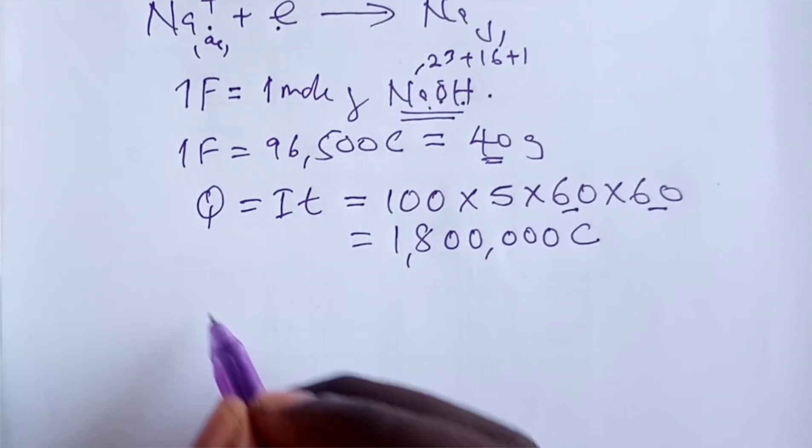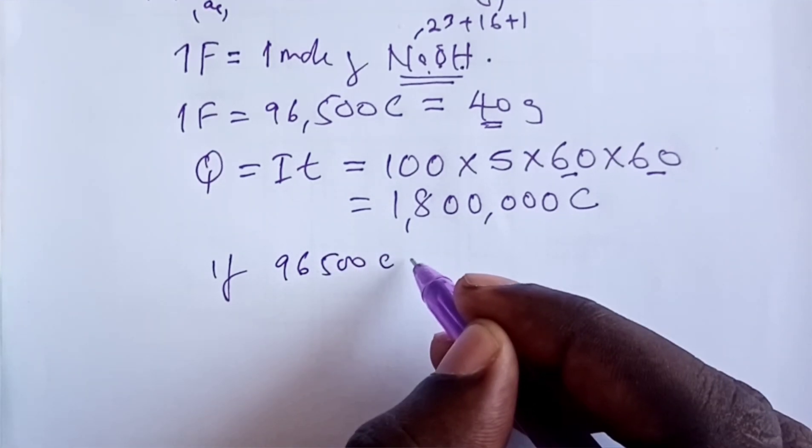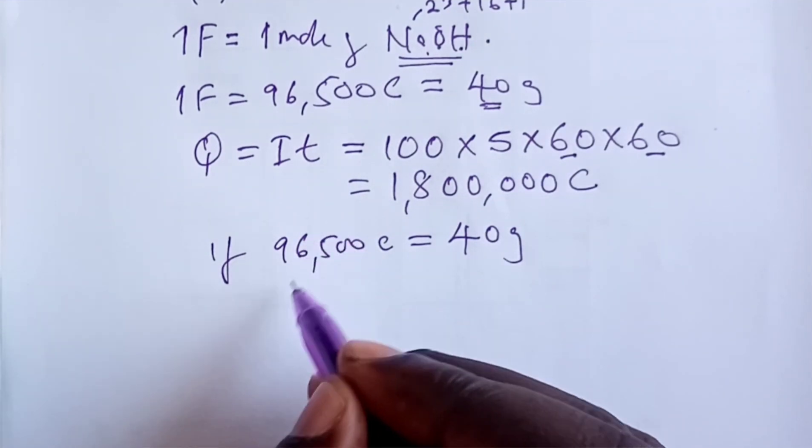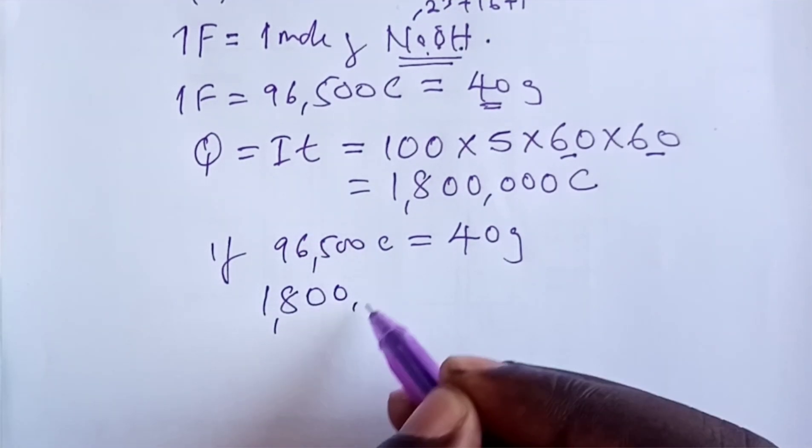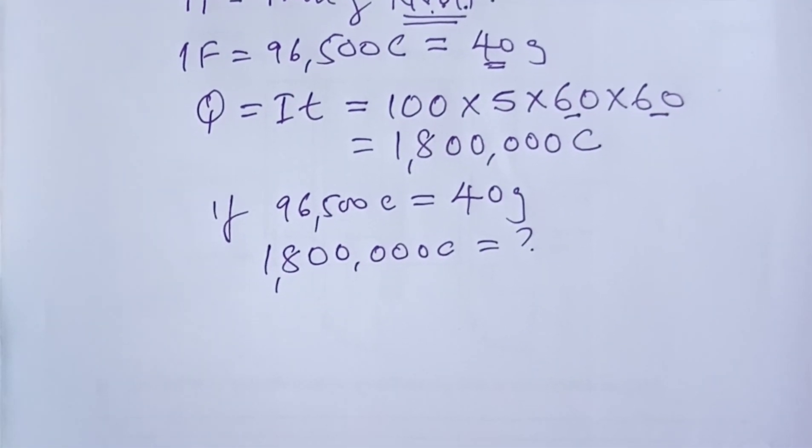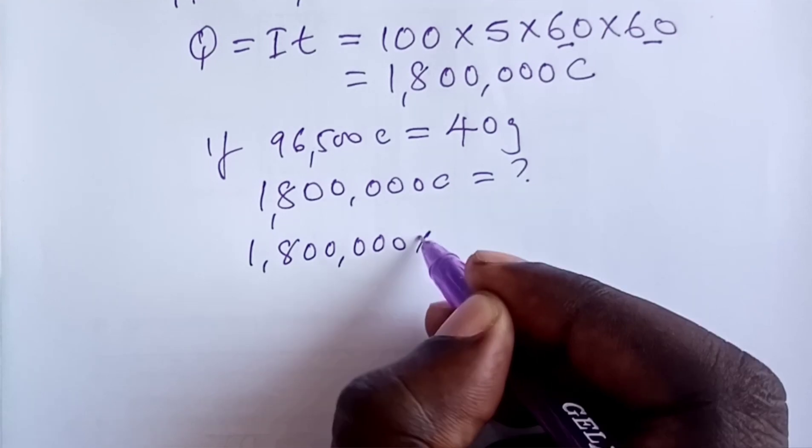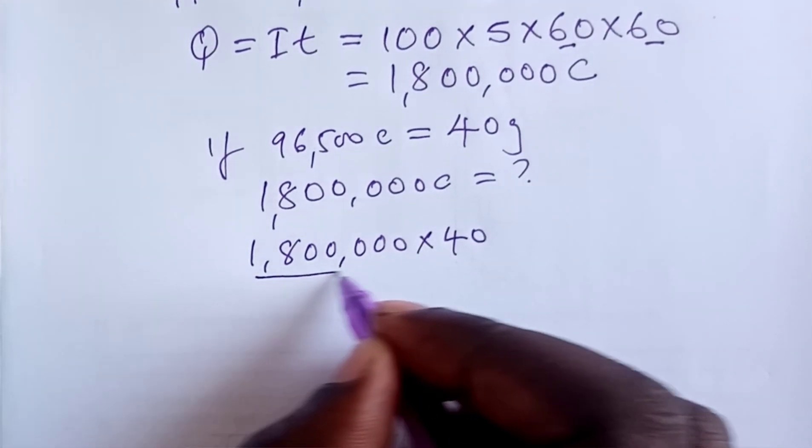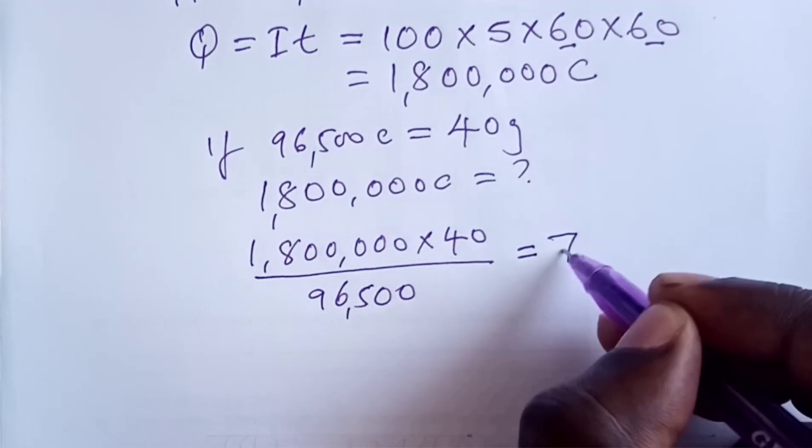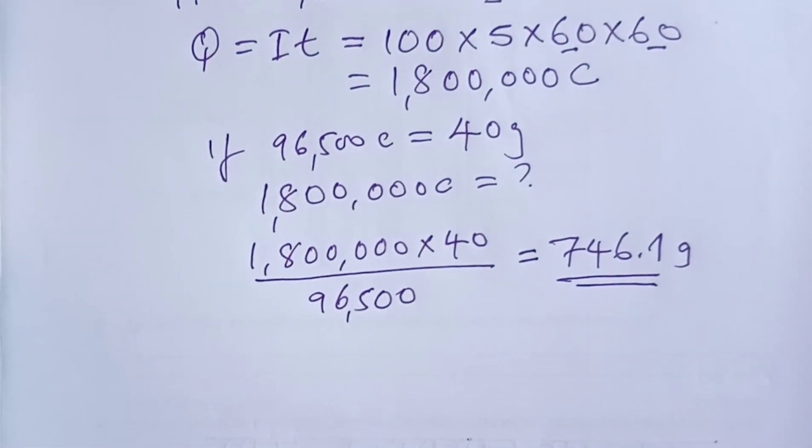My last argument would be that if 96,500 coulombs was able to give me 40 grams of sodium hydroxide, how about 1,800,000 coulombs? How much sodium hydroxide would I get? Cross multiplication gives us 1,800,000 multiplied by 40 divided by 96,500, and the answer is 746.1 grams of sodium hydroxide. All that for 4 marks.